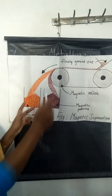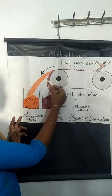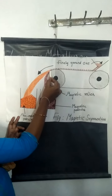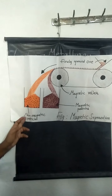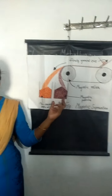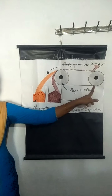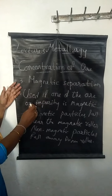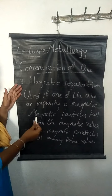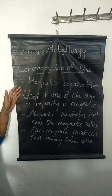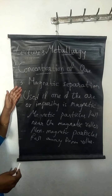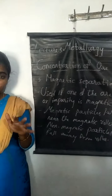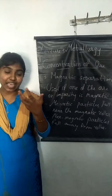When the ore reaches the magnetic roller, the magnetic particles get attracted towards the roller and fall into one beaker, whereas the non-magnetic particles are not attracted and fall into a separate beaker. This is how gangue particles are separated from ore particles using magnetic separation. Key points: one of the ore or impurity must be magnetic; magnetic particles fall near the roller, non-magnetic particles fall away. The best example is hematite ore (Fe2O3), where iron particles are attracted to the magnetic roller and gangue particles move away.